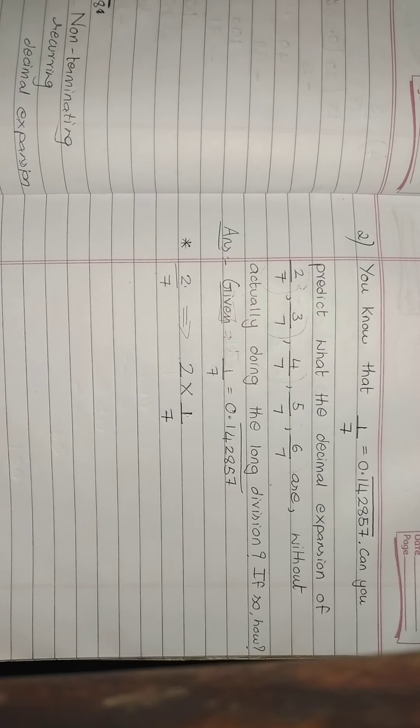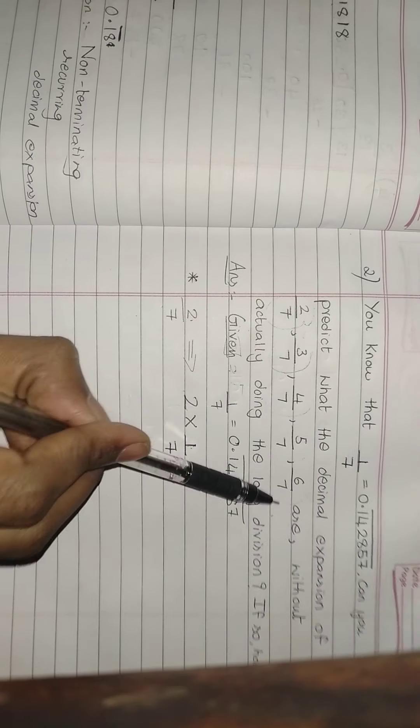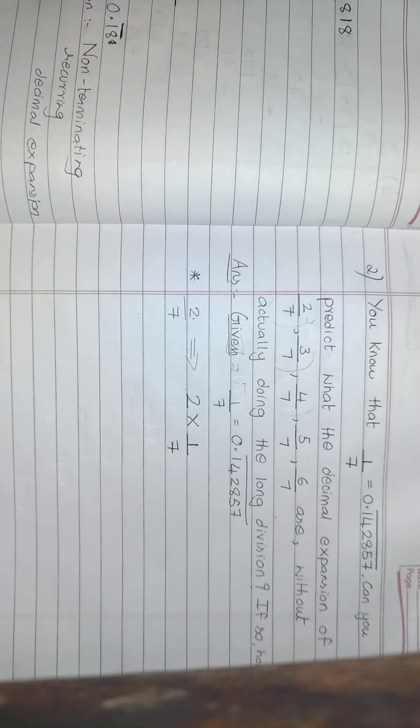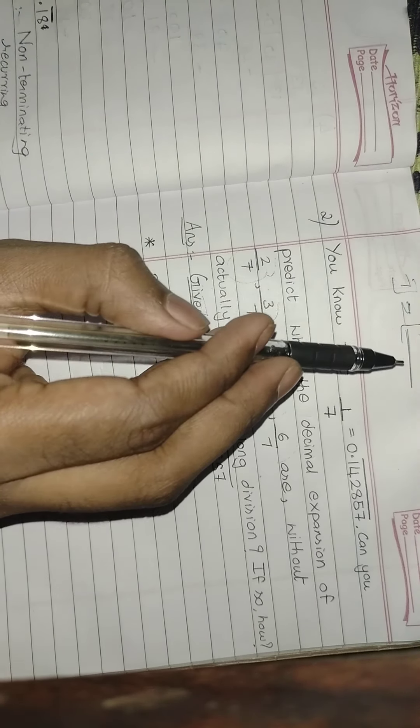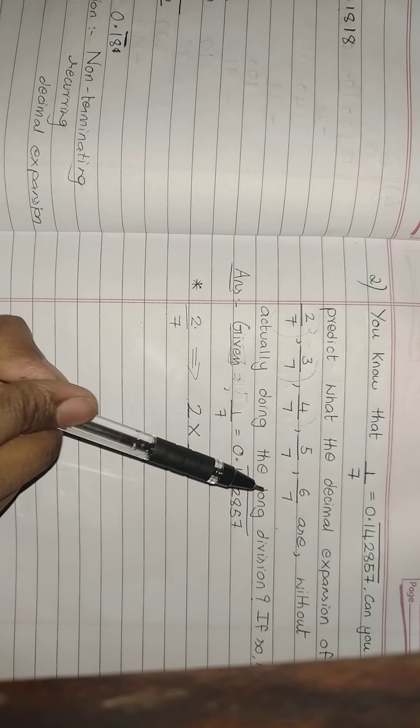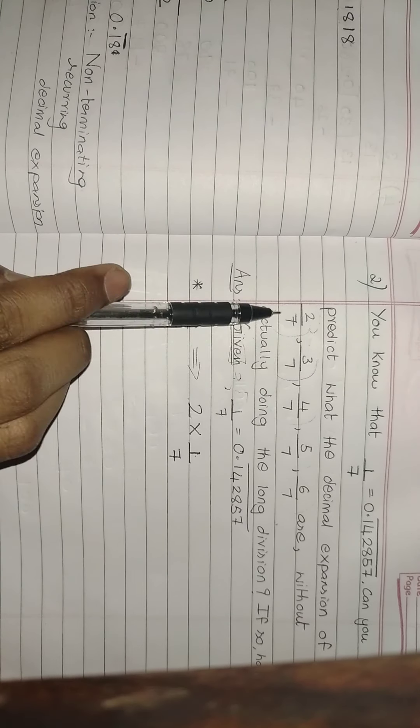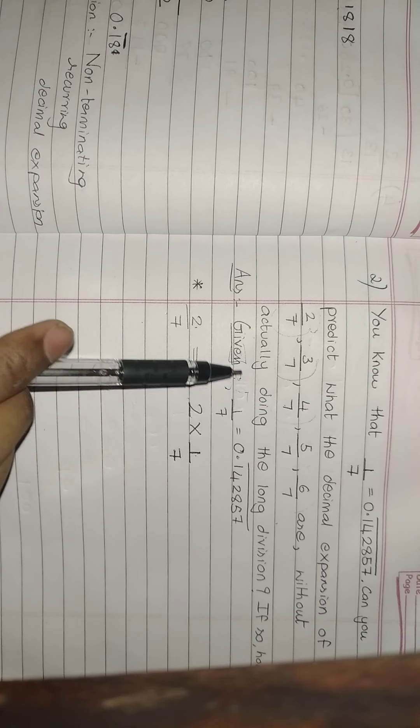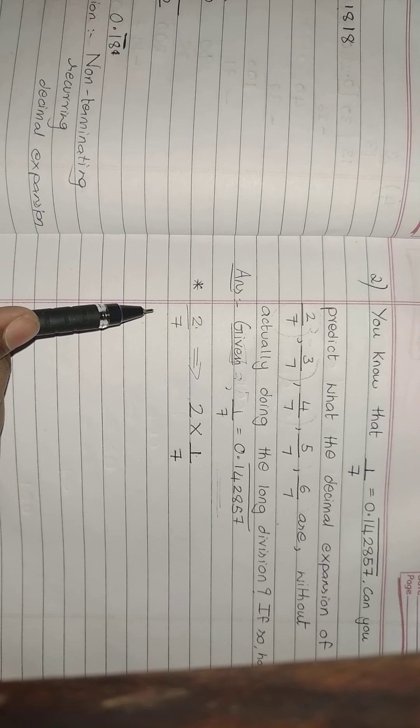If so, how? So they have given 1 by 7. Actually we need to find the decimal expansion of these numbers means we need to divide this and find what quotient we are getting. But what they are asking us means we should not divide it, without actual long division. Instead of dividing, we need to find the decimal form. How to find without division? The only hint they have given is 1 by 7 equals this number.